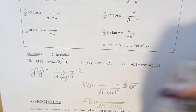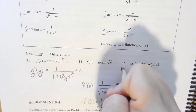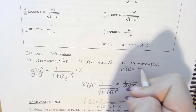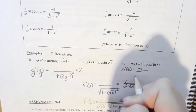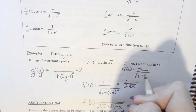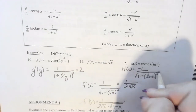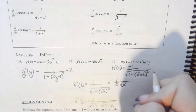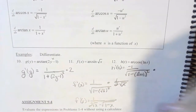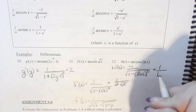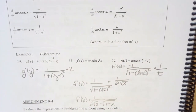One more: h prime of t for arc cosine of ln(t). The arc cosine derivative is negative 1 over √(1 − u²). So h prime of t equals negative 1 over √(1 − (ln t)²), times the derivative of ln(t) which is 1/t. Remember all of ln(t) is in parentheses so it's clearly squared.